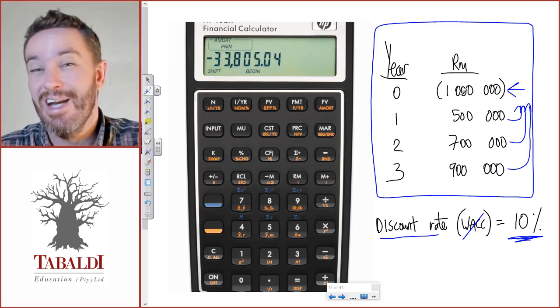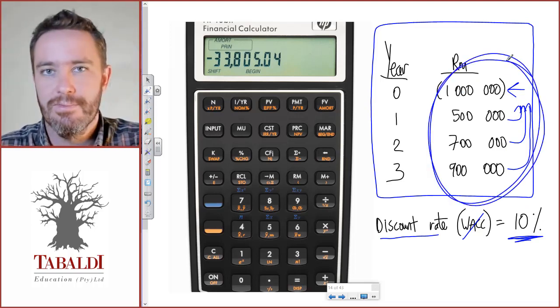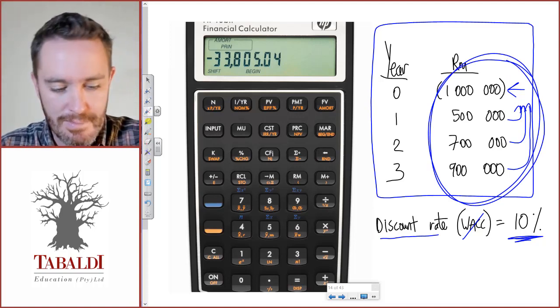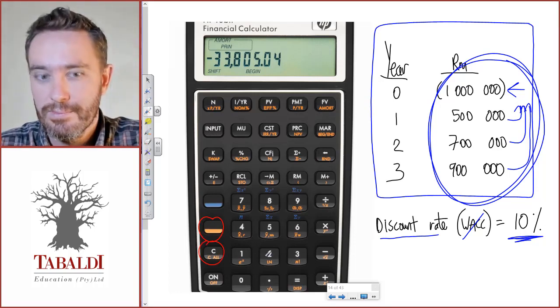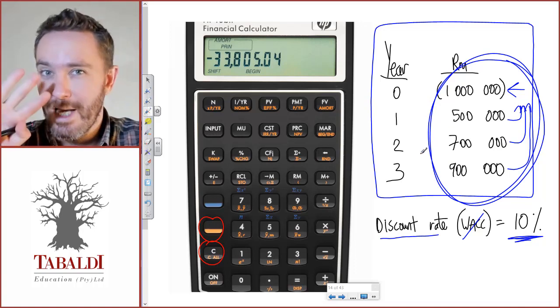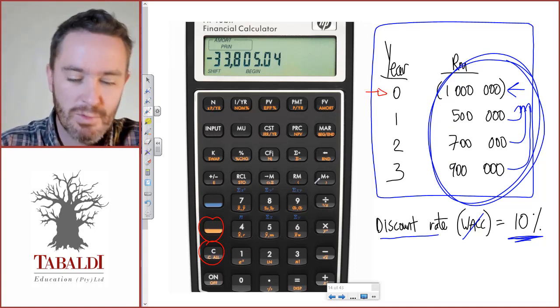Let's see how we do that on the calculator. The first step is to clear your memory: shift, clear all. Then we're going to start inputting our four cash flows. It's three years, but remember we've got year zero, so your first input will always be for year zero.